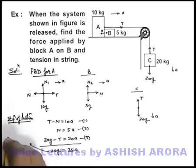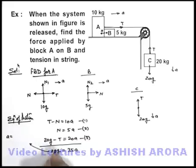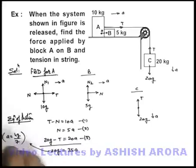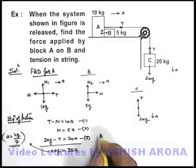Which gives us the value of acceleration of blocks that is 20g by 35, that is 4g by 7. So this is the acceleration with which the system is moving.